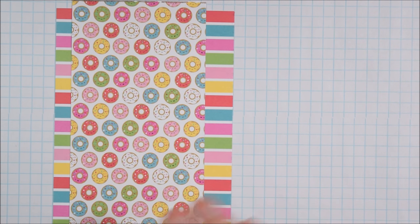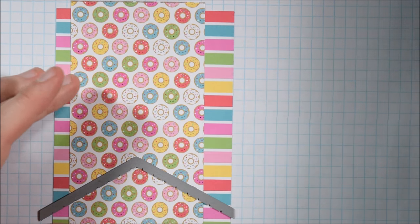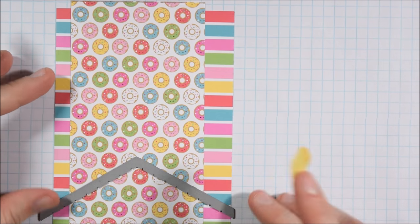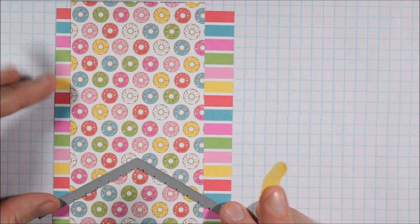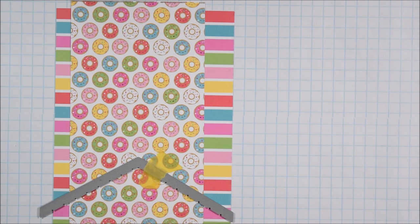Now with this donuts paper, I didn't want it to be a whole card base because it's so bold, but I didn't want it to be so small either because it is such a fun paper and I want you to really be able to see the pattern. So instead I cut it into a three inch strip, like I mentioned before.